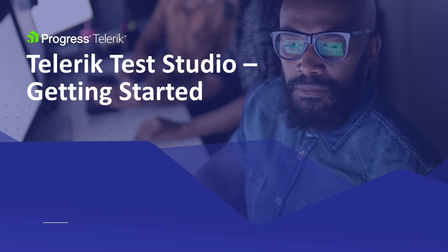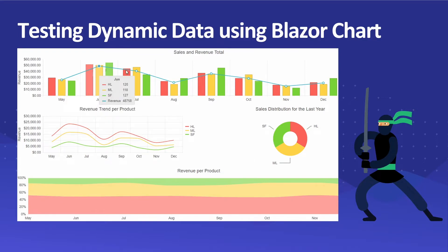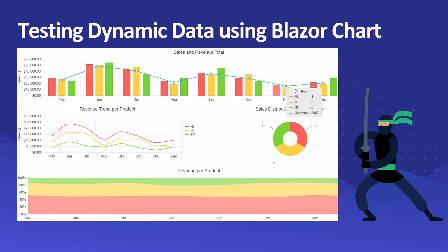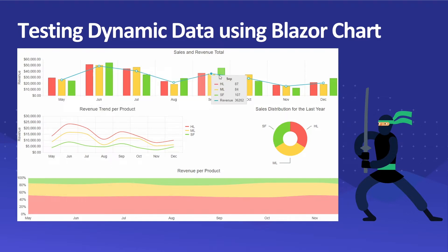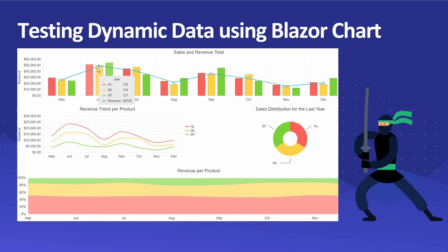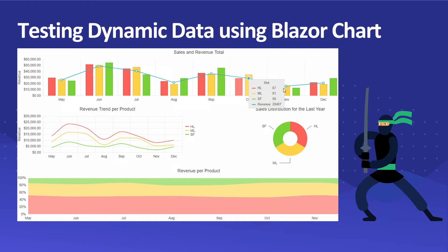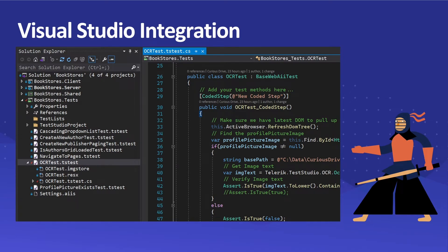Hello everyone, welcome to the Getting Started video series for Telerik Test Studio. In this video I'm going to talk about how you can test dynamic data. For the demo we are going to use Telerik's Blazor chart component which is pulling data from a backend service. We are going to use Telerik Test Studio's OCR technology to capture images of this chart, convert those images into text, and verify the text against the service which is actually pulling the data to populate this chart.